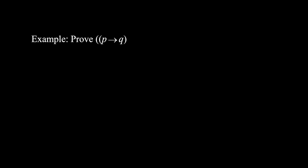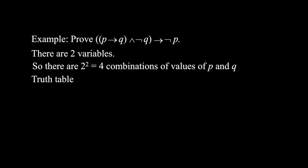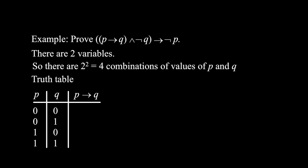Use a truth table to prove that: (p implies q) and not q, implies not p. Here, there are two variables. So there are 2 to the power 2, that is 4 combinations of values of p and q. We put p and q systematically in the first and second columns. Then in the third column, we evaluate p implies q. This gives only 0 when p is 1 and q is 0, otherwise 1s.